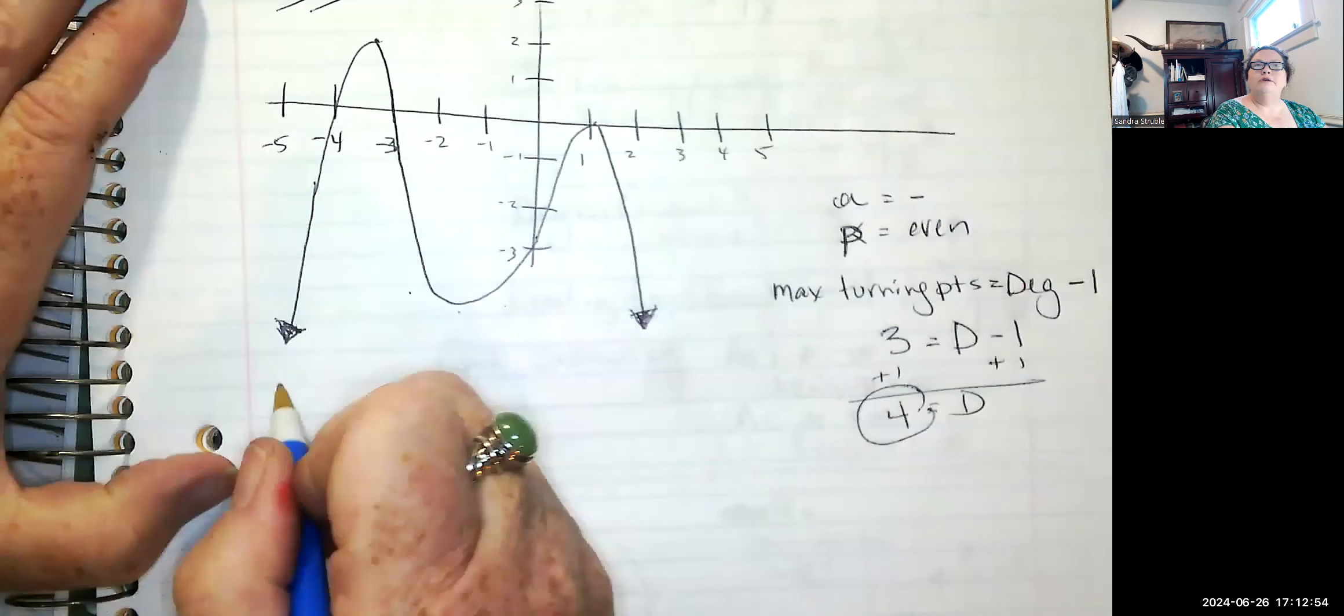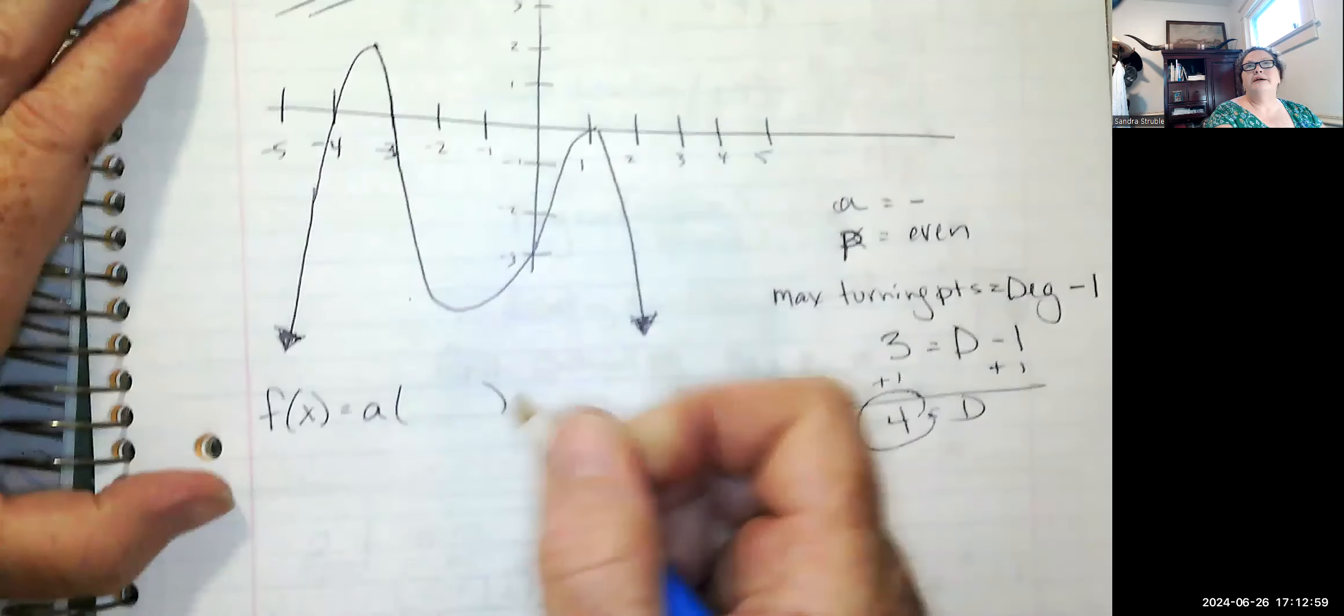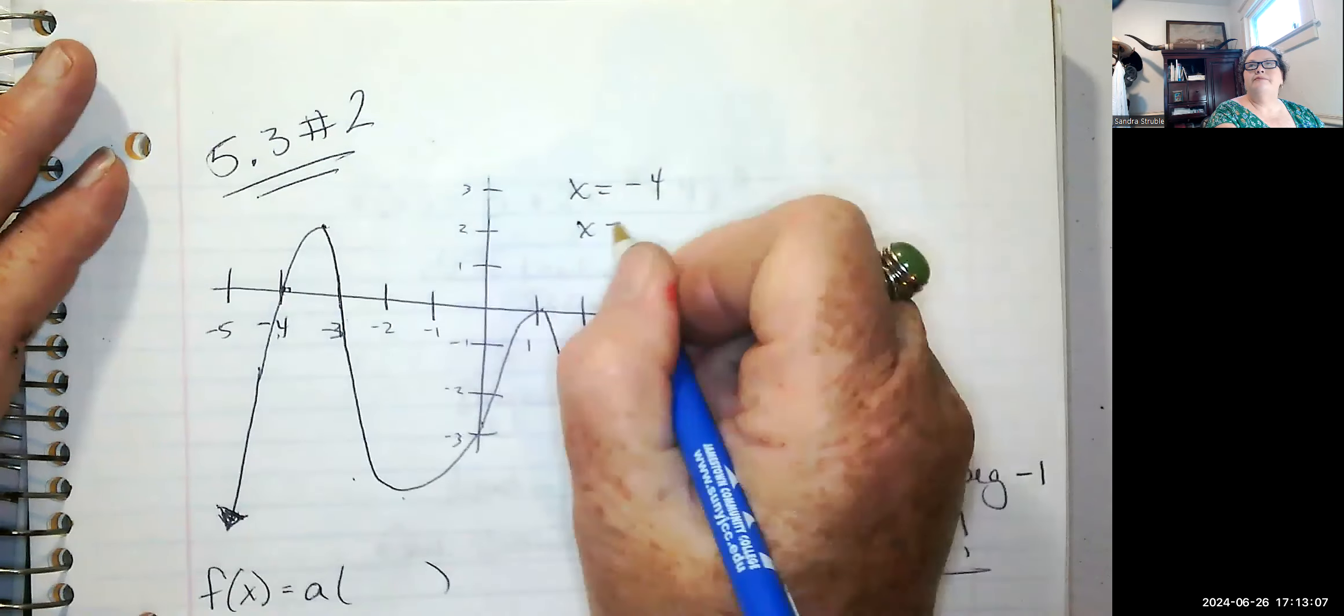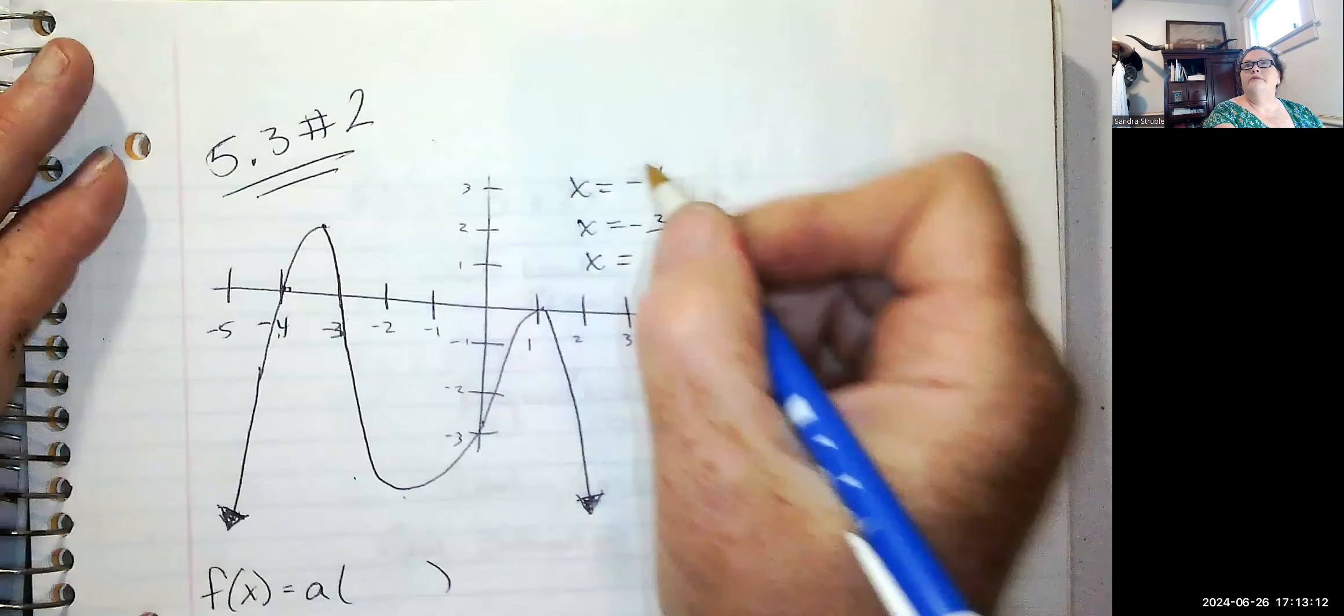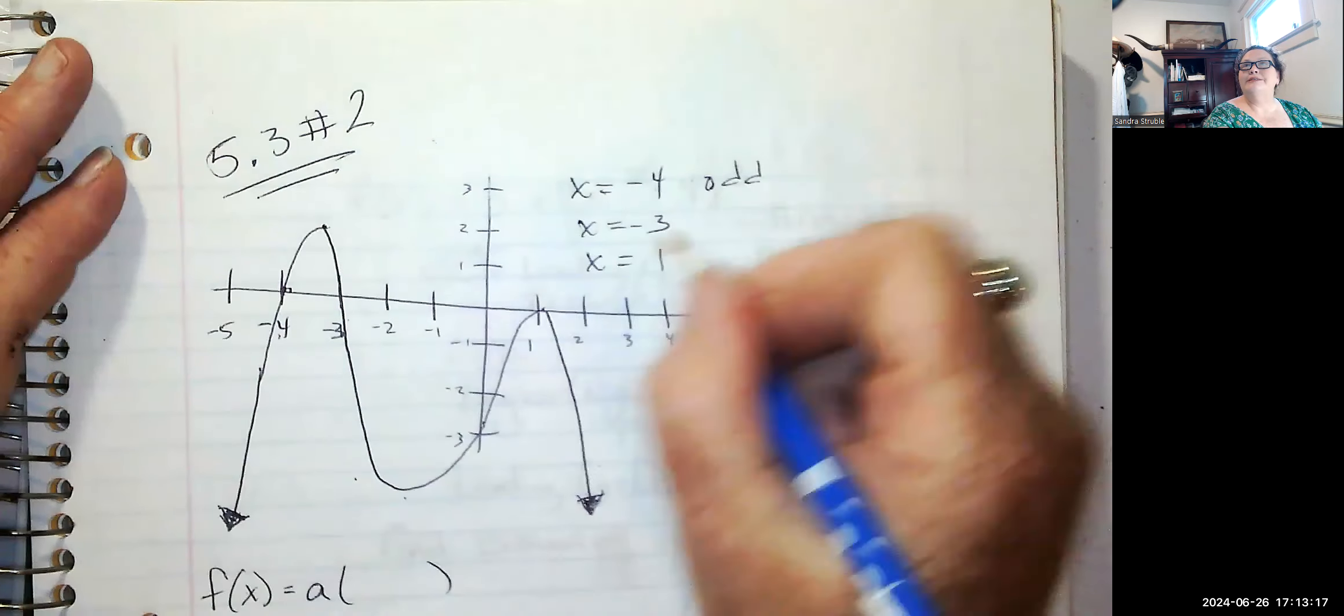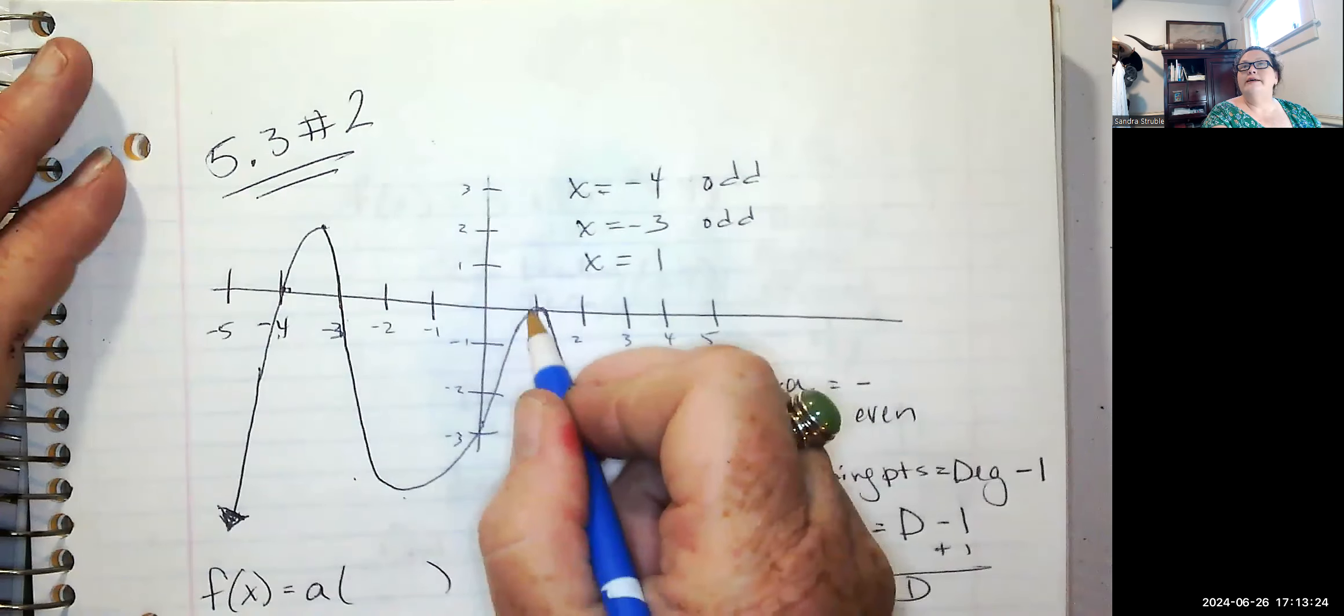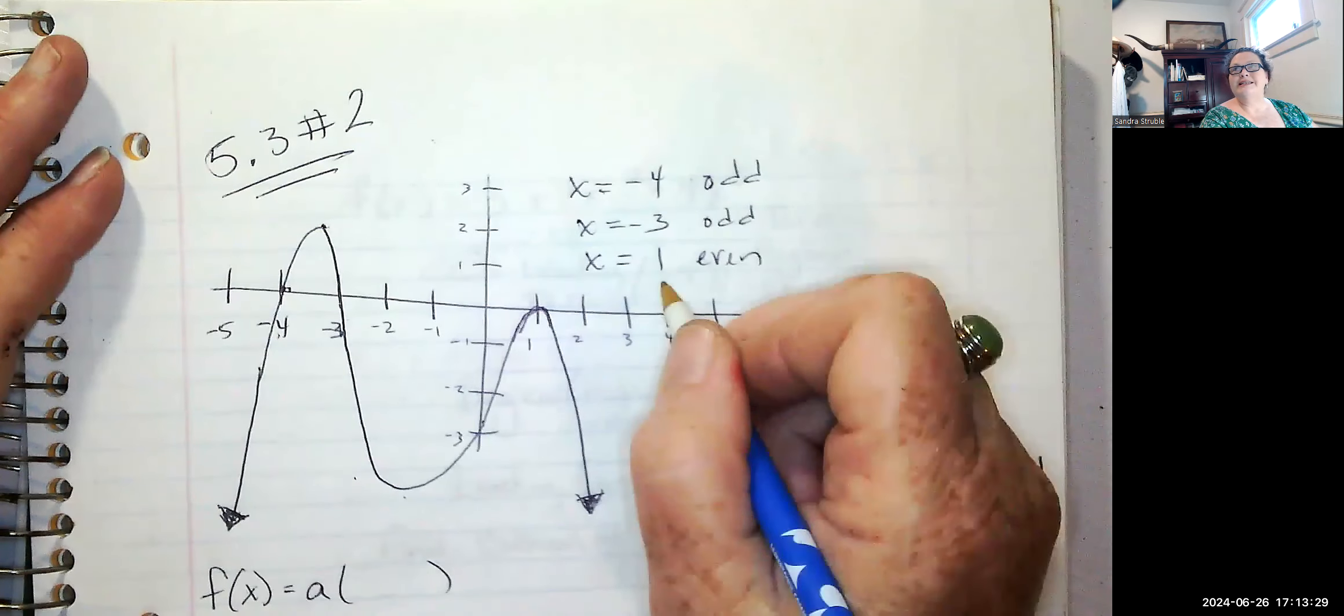Now I can come along and find my zeros. My zeros are at negative four, and X equals negative three, and X equals one. X equals negative four is odd, the multiplicity, as is X equals negative three, because it is crossing through the X axis. Because at X equals one, it is bouncing off of it. That means it has to be even. So the exponent is going to be at least a two.